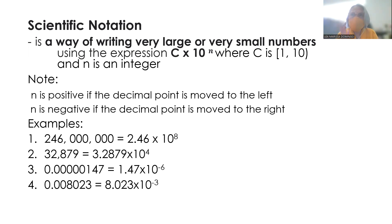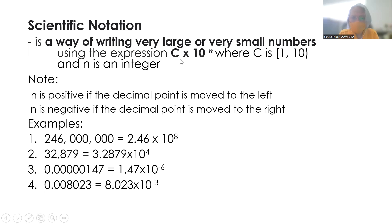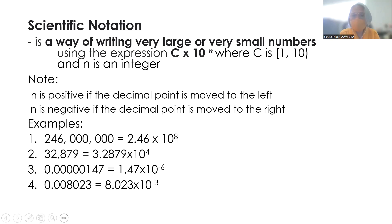Basta mas mababa sa 10. So pwedeng 9.995, 9.99. Kaya hindi natin alam kasi infinitely many more. Basta dapat less than 10 or greater than or equal to 1. And n is an integer. So yung very large or very small numbers, gagawin lang natin yung forma c times 10 to the n. Dalawa lang yung babawin natin — yung value ng c mula sa interval notation na ito, at yung value ng n. N is positive if the decimal point is moved to the left, and n is negative if the decimal point is moved to the right.